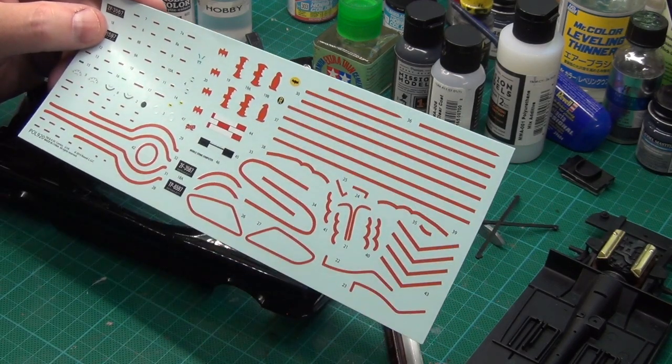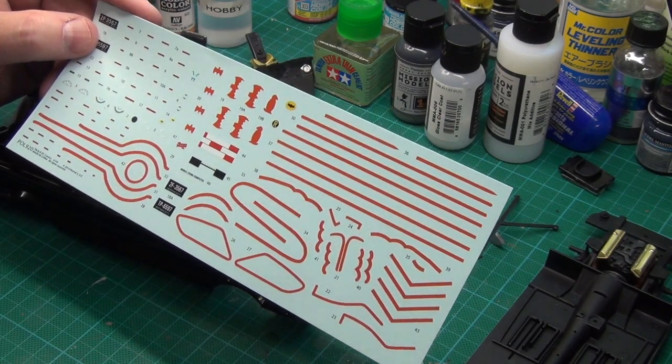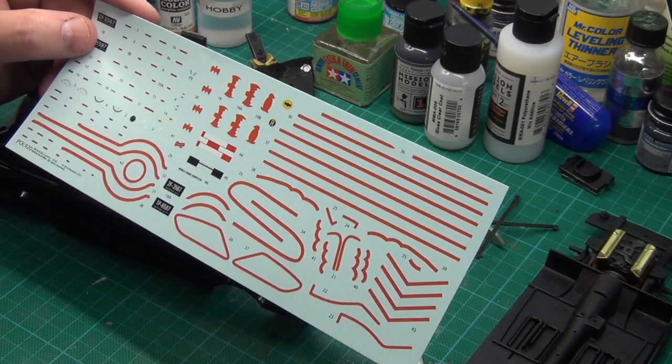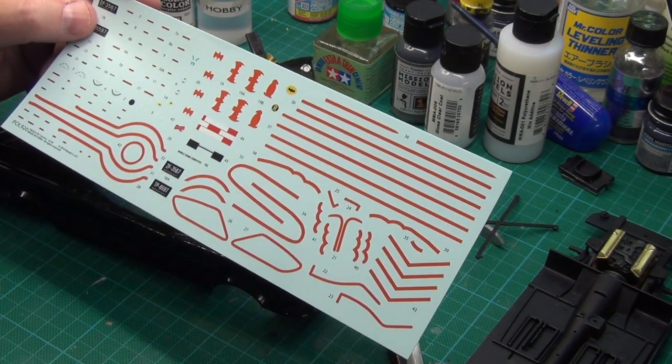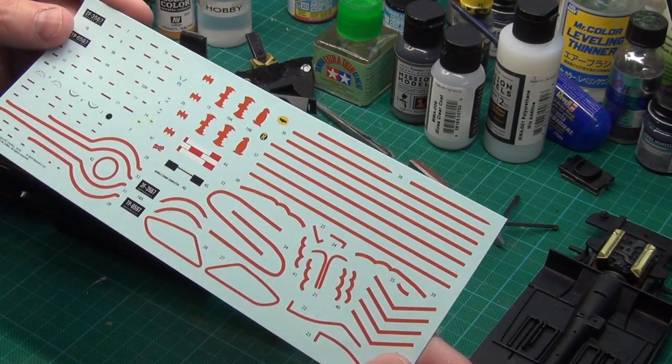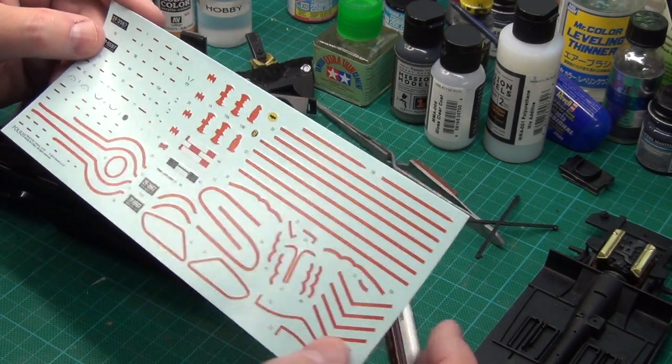I'm not going to be using that in my kit, but I thought I'd cut that one out, put it in some water and see if it actually works or whether it starts to fall apart like the other decal sheet did. If that happens I'm going to have to come up with a plan B.